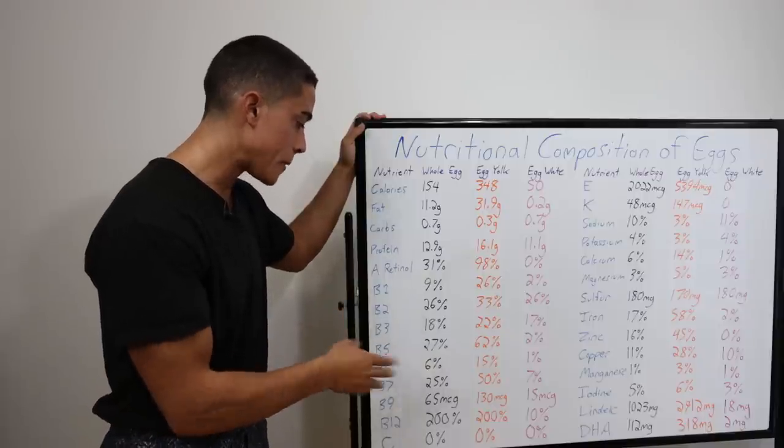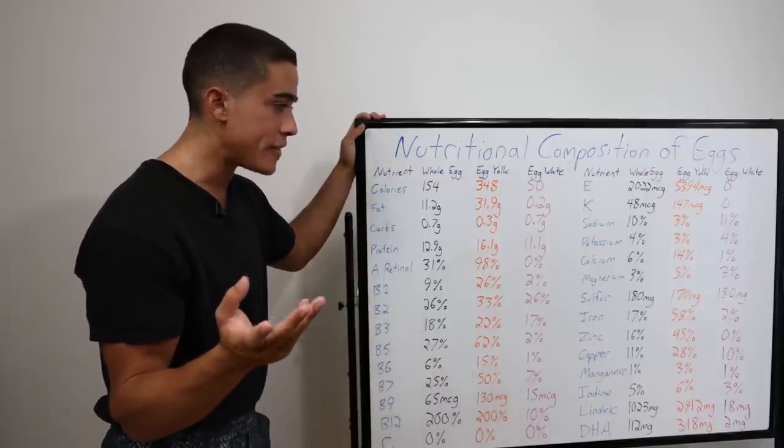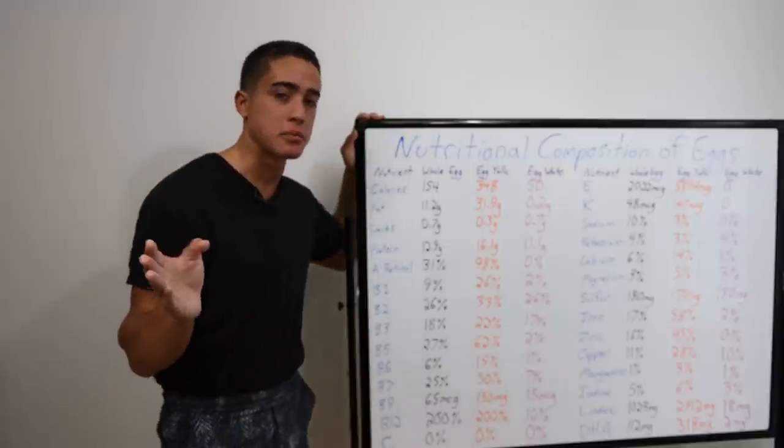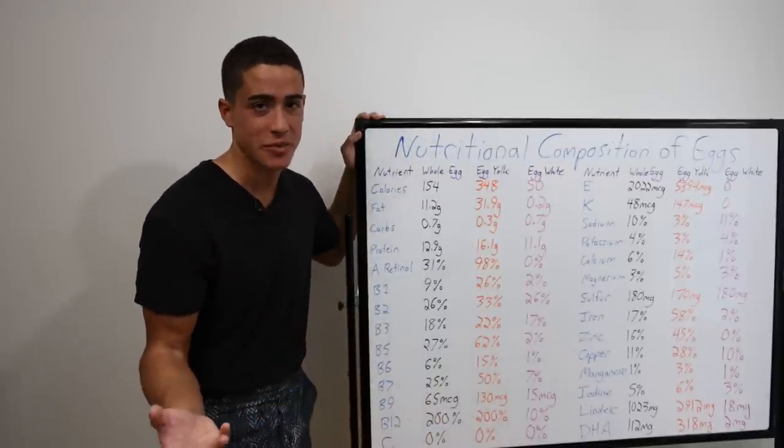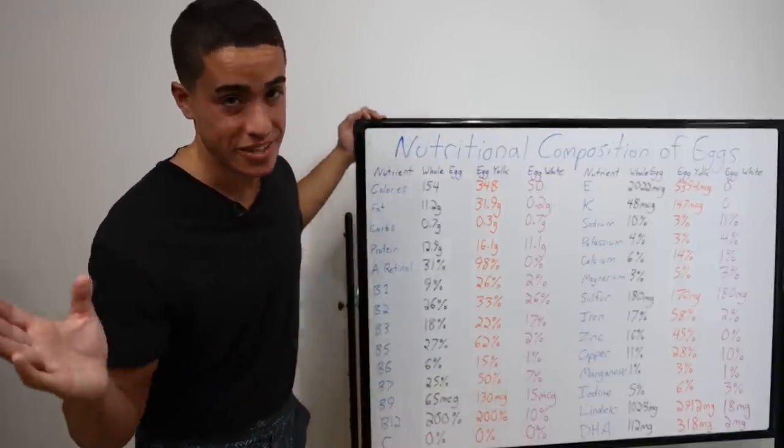Vitamin B12, pretty good across the board. And that's one of the RDAs that is probably a little too low. So one egg having 200% of your RDA of B12, to me that sounds a little bit silly.